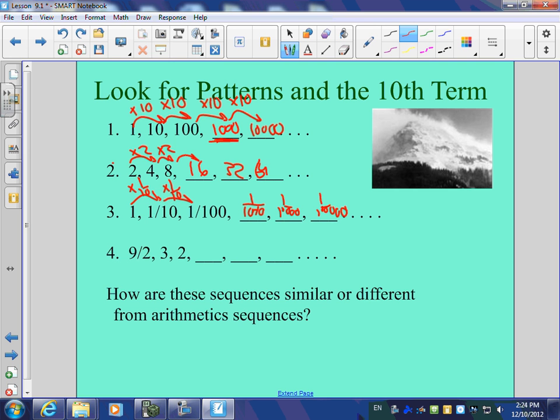So it seems to be a pattern here. How about this last one? Nine halves times what will give you three? One what? Two-thirds? Let's see if that works. Two-thirds. You lose the twos. Yep, that'll work. So it'll be times two-thirds. Three times two-thirds. Does that work? To give us two? Yep.